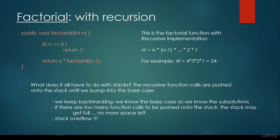Let's consider the factorial algorithm with recursion. The definition is that n factorial — usually denoted with an exclamation mark — is equal to n times n−1 times ... times 2 times 1. For example, the factorial of 4 is going to be 4 times 3 times 2 times 1, which equals 24.